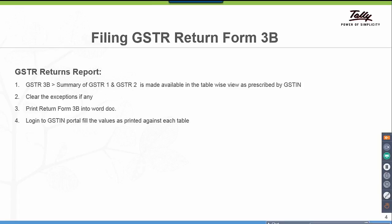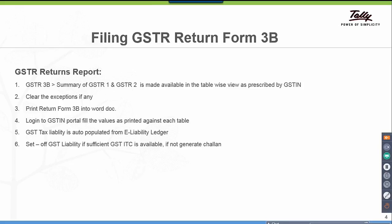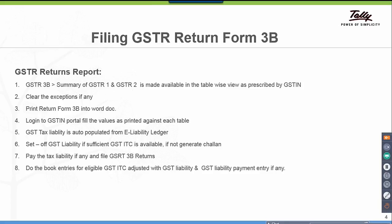Log into GSTN portal. Fill the values as printed against each table. GST tax liability is auto-populated from the e-liability ledger. Set off GST liability if sufficient GST ITC is available; if not, generate a Chalan. Pay the tax liability if any and file GSTR 3B returns. Later, do the book entries for eligible GST input tax credit adjusted with GST liability, and GST liability payment entry if any.